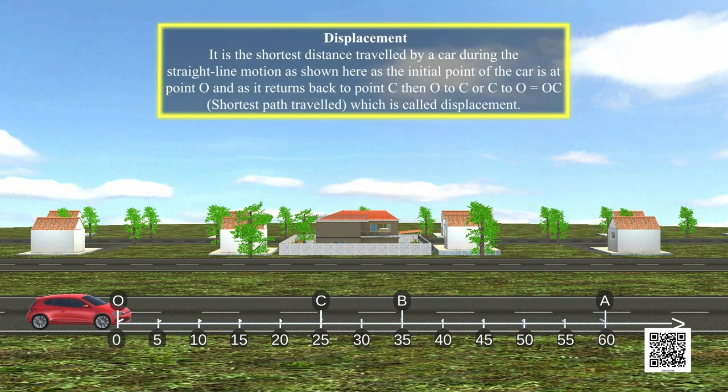Displacement: It is the shortest distance travelled by a car during the straight line motion, as shown here, as the initial point of the car is at point O and as it returns back to point C.